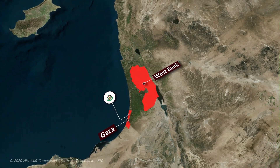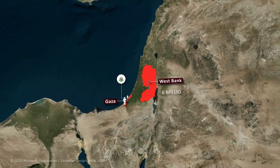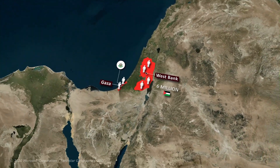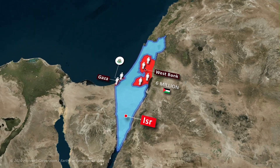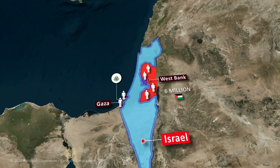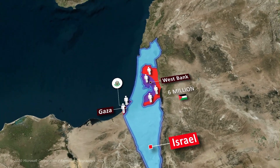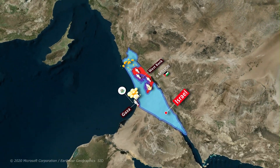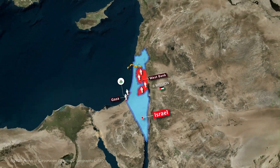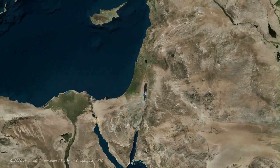There are almost 6 million Palestinians in Gaza and the West Bank, who will never agree to be controlled by Israel. This is the reason why they will continue to fight, making a possible peace in the region look extremely improbable.